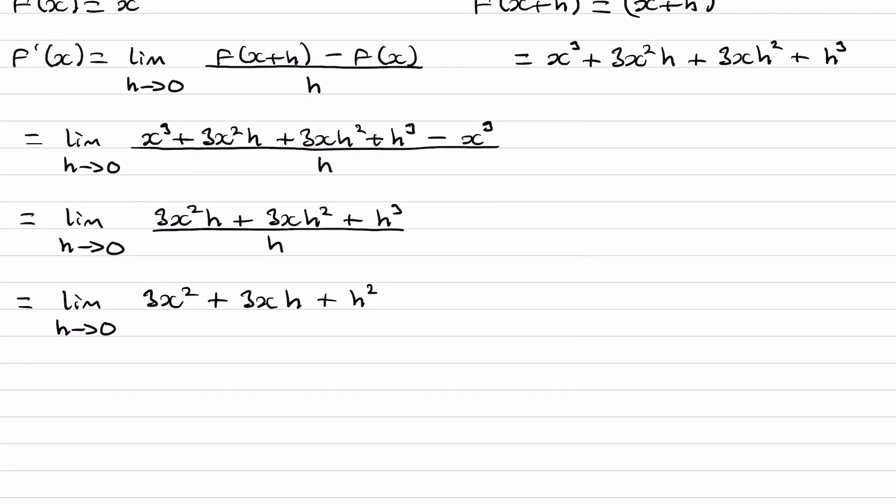And then finally, we let h approach 0. So basically we see what happens when h gets closer and closer to 0. Well, when that happens, these two terms will become 0. So we're just left with 3x squared.